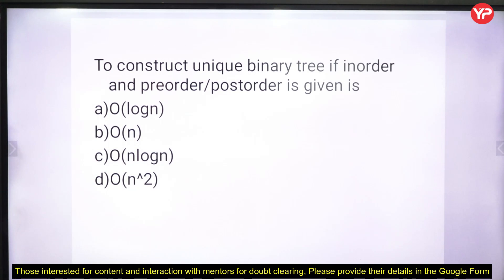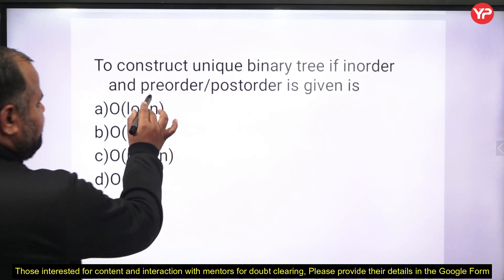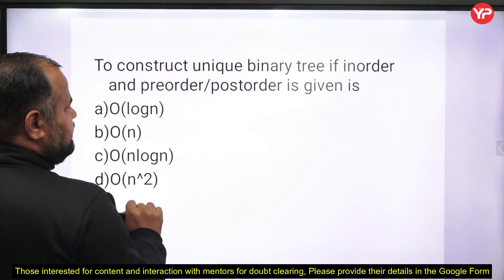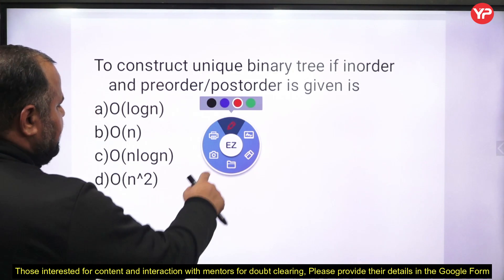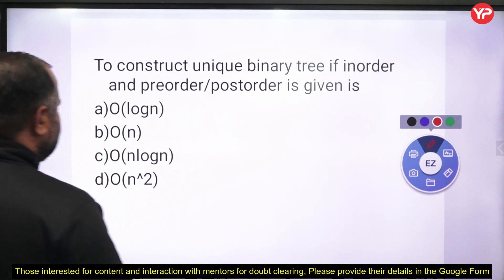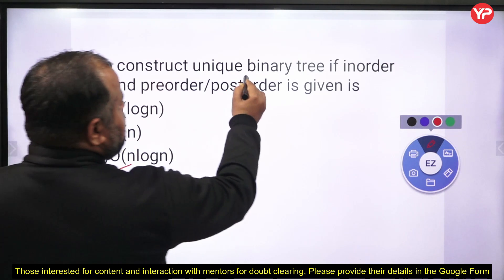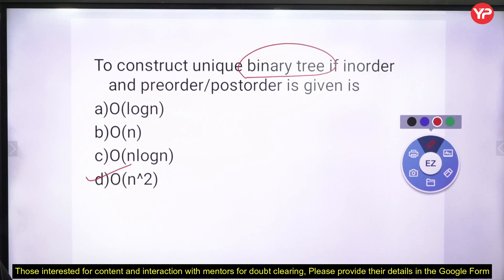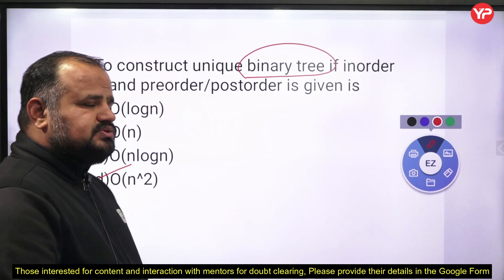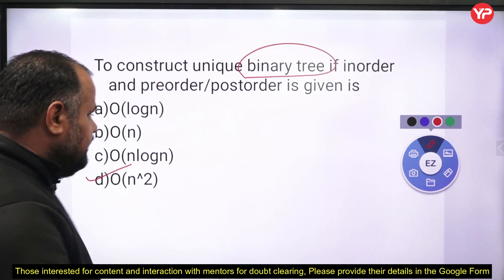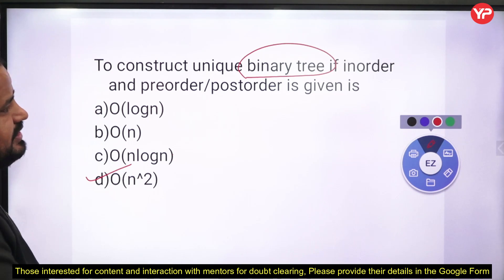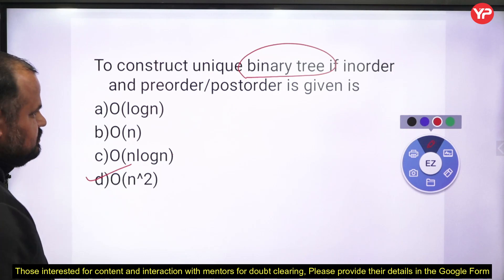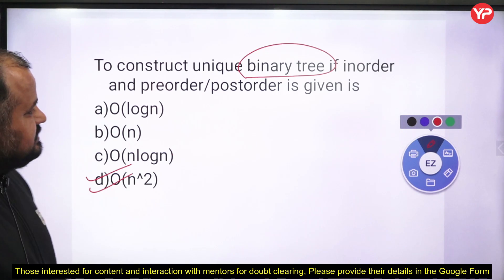To construct a unique binary tree, if in-order and either pre-order or post-order is given, it takes O(n²) time. Why O(n²)? Because this is a general binary tree, not a binary search tree. In a BST, in-order traversal is sorted, which would allow O(n log n), but for a general binary tree in-order is not necessarily sorted, so it takes O(n²) time.